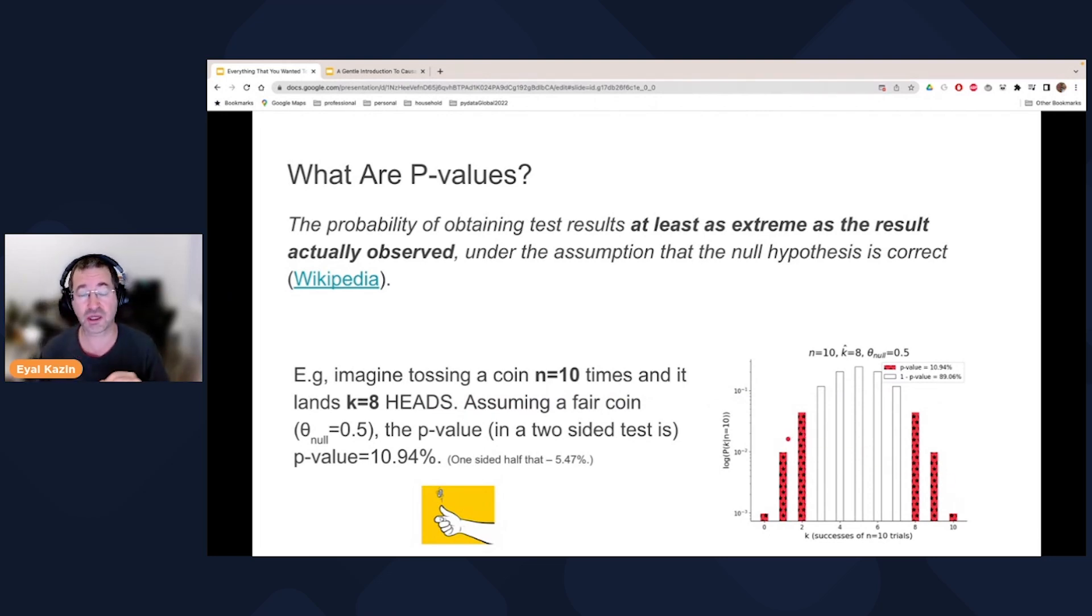But also on the other side, it's something called a two-sided test because we didn't know which way we're going to be extreme. Otherwise, it's something called a one-sided test. So what we do is we sum up all these red bars and what we get is a p-value of 11%. So is that considered extreme? Should we rule out the null hypothesis? Well, most likely not. Around 11% is not that extreme.